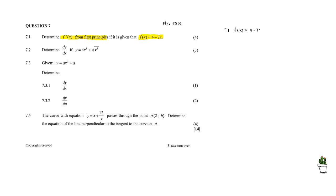The instruction 'from first principles' is basically telling us to use our definition of a derivative function — namely, that f prime of x is equal to the limit as h tends to 0 of f of x plus h minus f of x, divided by h.